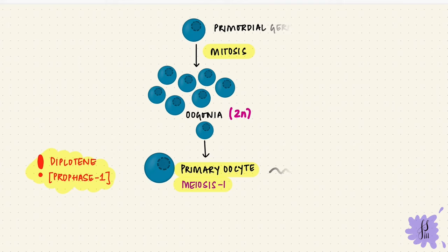At puberty, just before ovulation, there is a surge of luteinizing hormone. Under that influence, one primary oocyte completes the first meiotic division and forms a secondary oocyte, which gets most of the cytoplasm. The other cell is called the first polar body. Each of these has half the number of chromosomes because, remember, the first meiotic division is a reduction division.